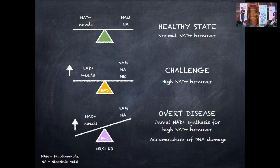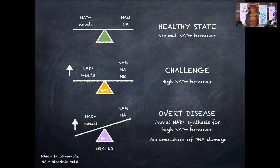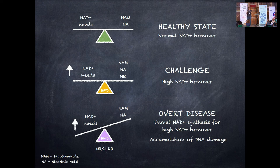Summarizing quickly: in a healthy normal state, NAD needs are well covered by the main dietary precursors — nicotinamide and nicotinic acid. When we have a challenge like a high fat diet, NAD needs increase, and that's probably where the nicotinamide riboside branch plays a role. If we knock out NRK1 and NAD needs clearly surpass the ability to synthesize NAD through the other precursors, we enter into trouble. The logical implication was: why not just give more nicotinamide or nicotinic acid to put the balance right back?